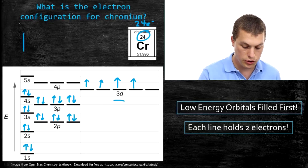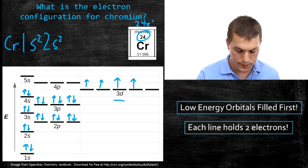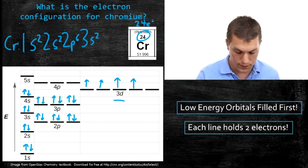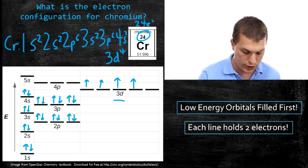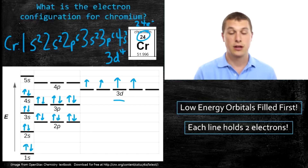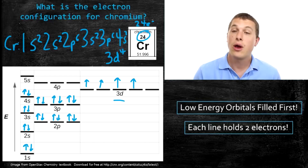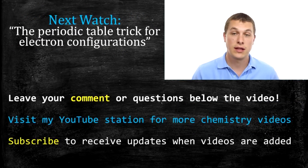Now we can write the electron configuration for chromium: 1s² 2s² 2p⁶ 3s² 3p⁶ 4s² 3d⁴. You can see there's a pattern. As elements get higher in terms of number of electrons, we don't just want to fill in these diagrams — we want to use the periodic table, which is a much quicker way. Now that you have a basic idea of what electron configurations are, go ahead and watch the next video, 'The Periodic Table Trick for Electron Configurations,' to learn how to write these much faster.